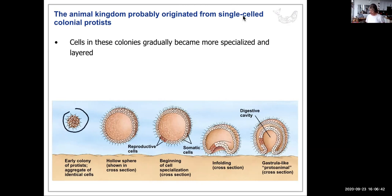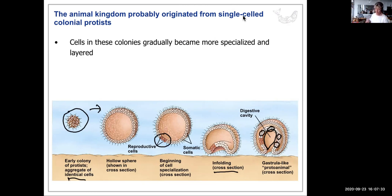An early colony of protist eukaryotes — an aggregate of identical cells — likely developed so that within the colony, some cells became specialized and perhaps formed a sphere. Some became reproductive cells, some became somatic (non-reproductive) cells, and perhaps there was infolding that created a gut-like area where prey could be concentrated and digested.